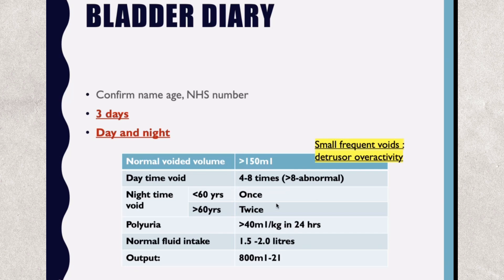The normal voided volume should be more than 150 ml. If the patient is voiding more frequently with small, frequent voids, it is an indicator of detrusor overactivity. Daytime voiding should be four to eight times; more than eight times is abnormal. For nocturia, if the patient is less than 60 years it should be only once; if more than 60 years, maximum twice.